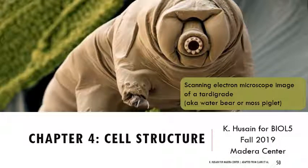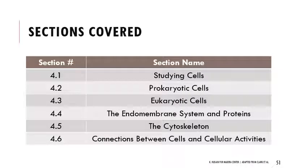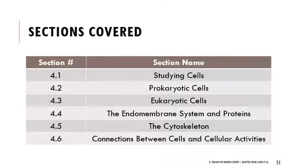Going on to our last chapter, chapter four about cell structure. We're going to start by talking briefly about microscopy — I'll skim through it because you should have talked about microscopy quite a bit in lab on Tuesday. When we talk about microscopy in section 4.1, we'll study cells, go over prokaryotic and eukaryotic cells, briefly touch on the endomembrane system, the cytoskeleton, and connections between cells. In general, a microscope is what we use to see things that can't be seen by our eyes, and the type of microscope makes a difference in terms of the micrograph, or image, that we see.